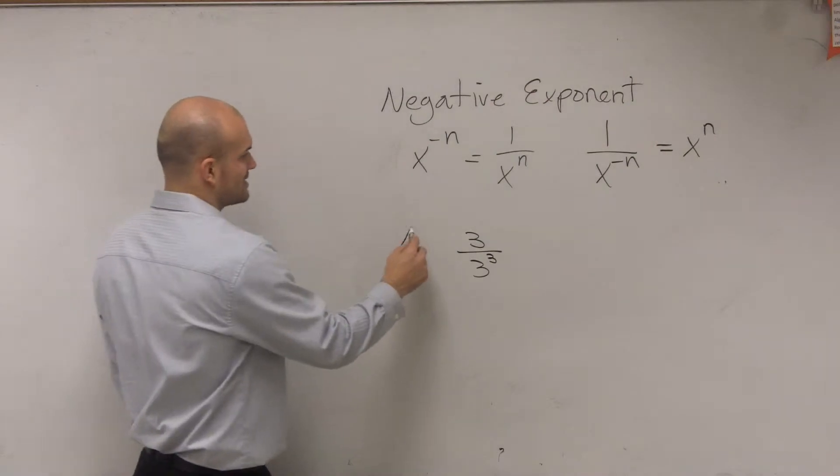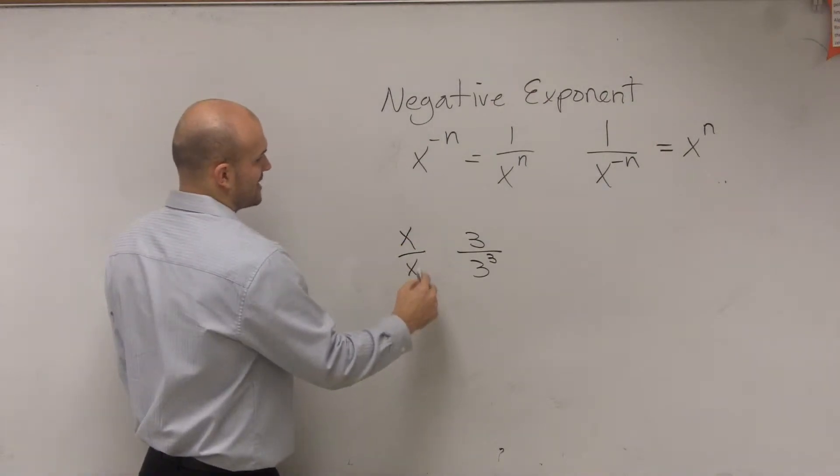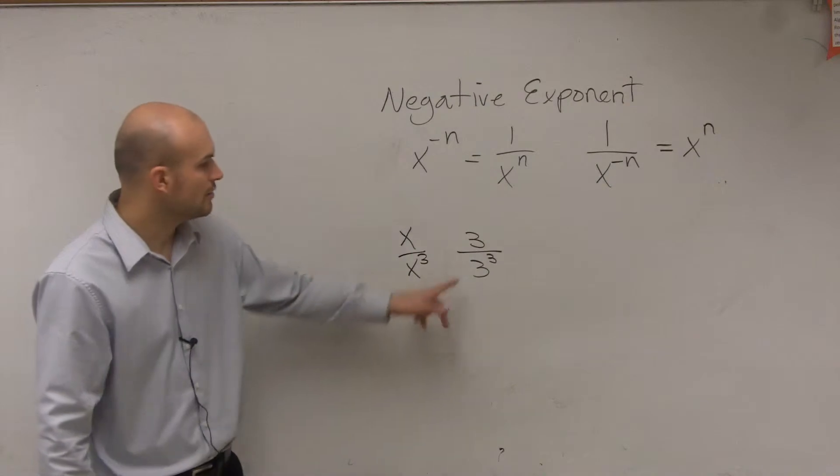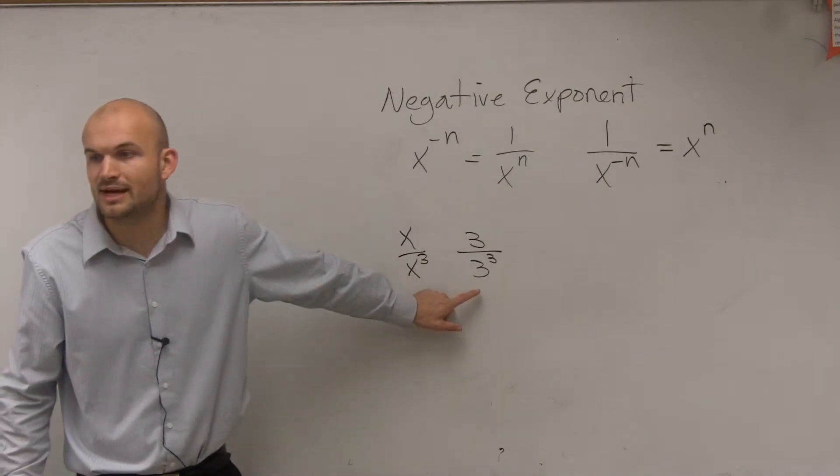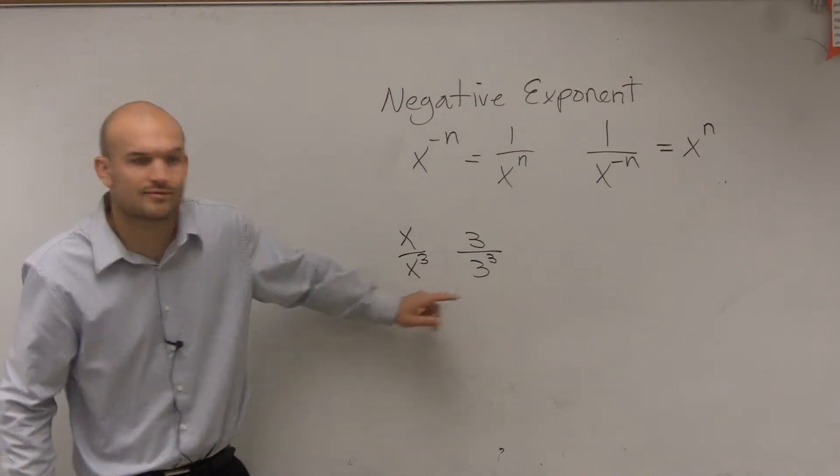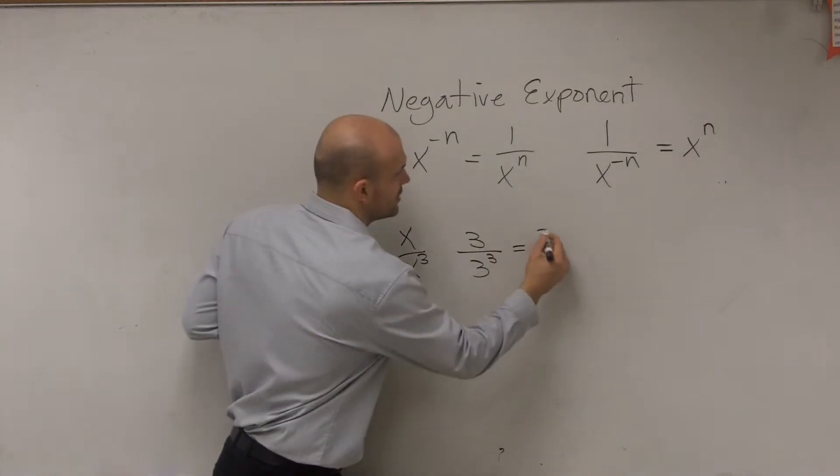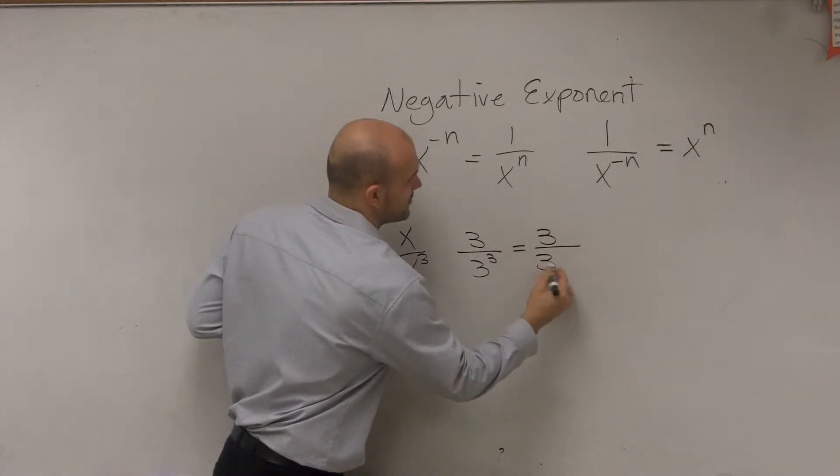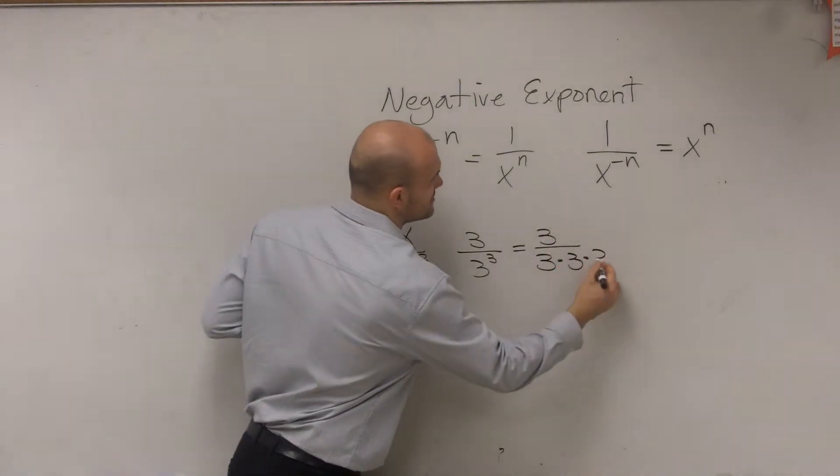Or we could pretend it's like x divided by x cubed. But let's take a look at 3 divided by 3 cubed. 3 cubed is what? 3 times 3 times 3, right? So really this is 3 divided by 3 times 3 times 3.